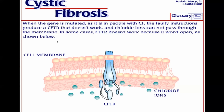CF messes with a protein called CFTR, which is what allows chloride ions to pass through cellular membranes. This is very important when it comes to lung function, as well as digestive function, and also sweat glands. When that protein doesn't work properly, the CFTR cannot allow the chloride ions to pass through, and that's how you get the mucus buildup.